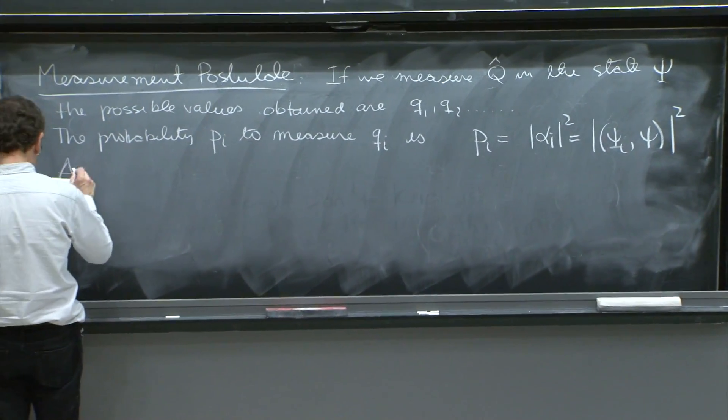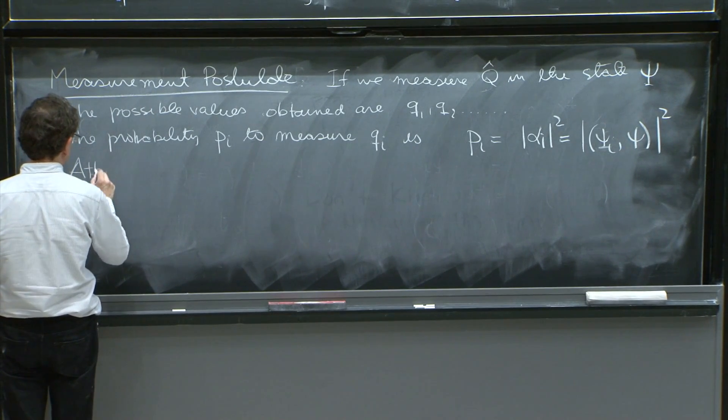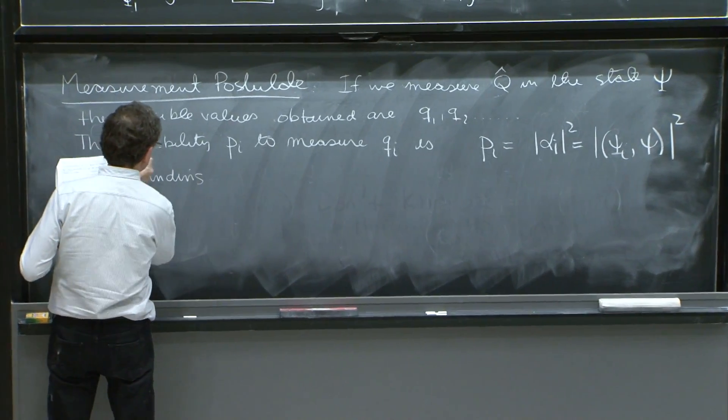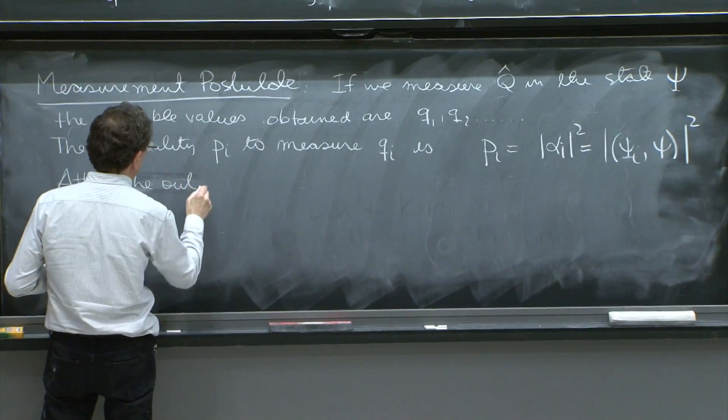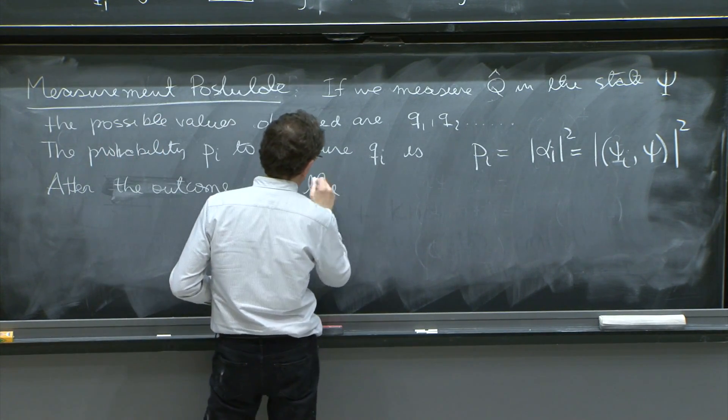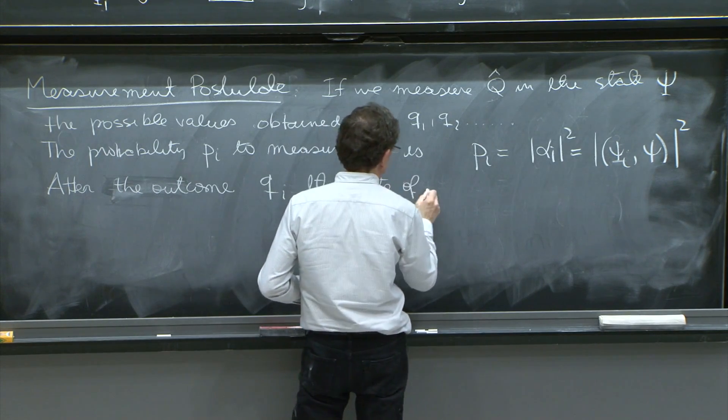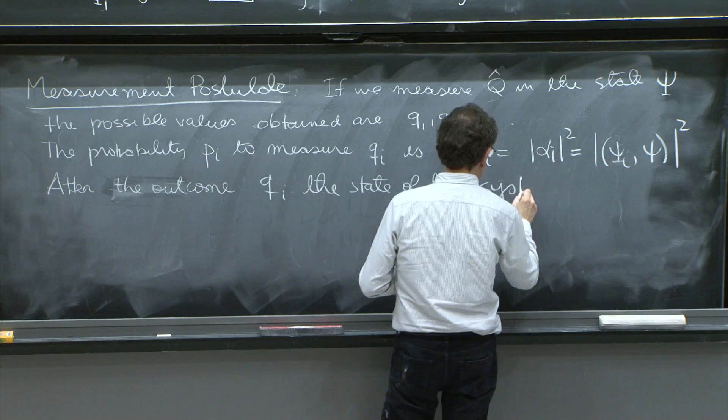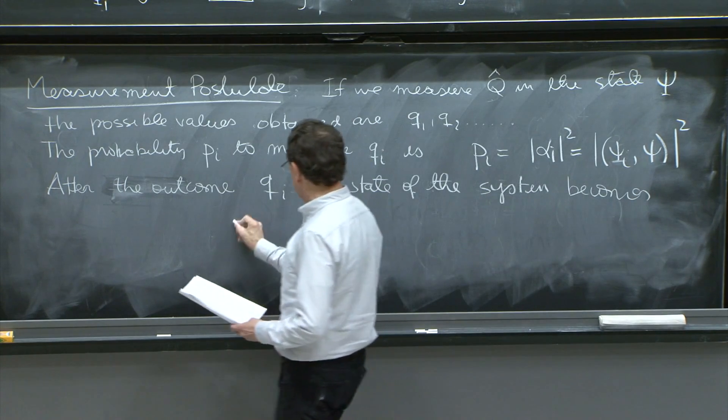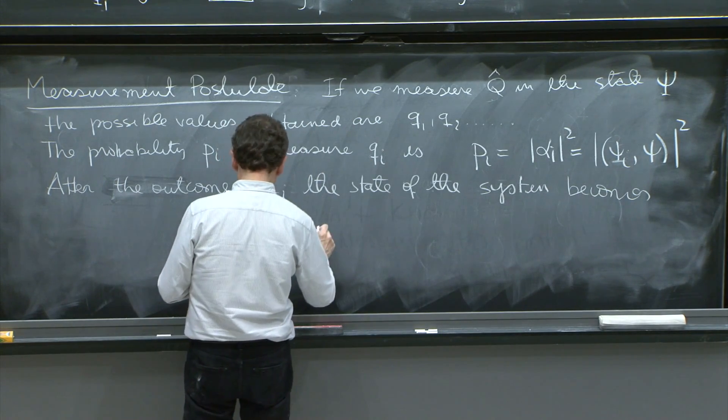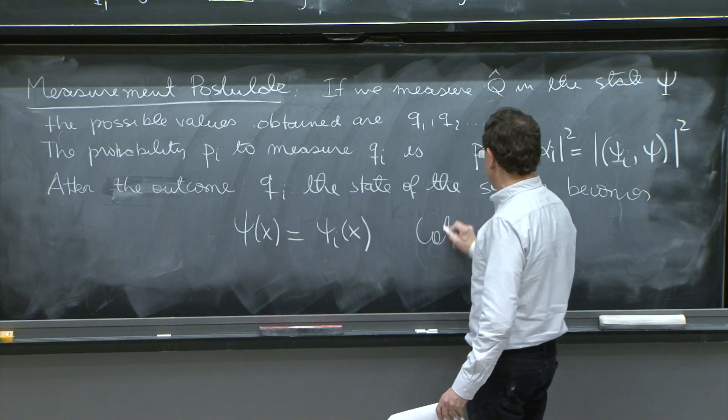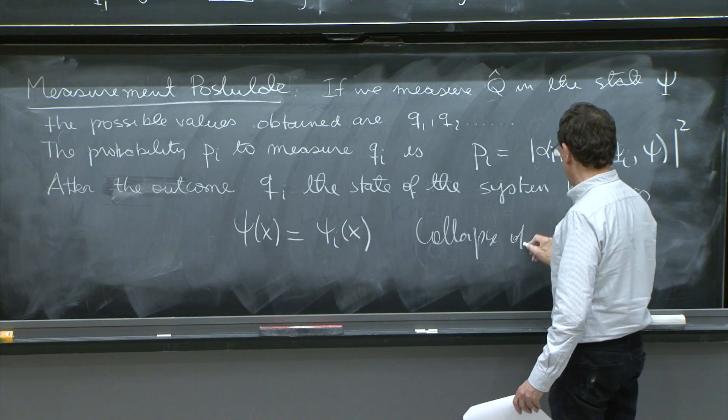And finally, after finding the outcome qi, the state of the system becomes psi of x equals psi i of x. And this is the collapse of the wave function.